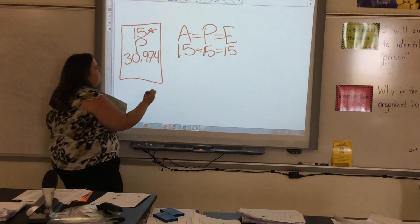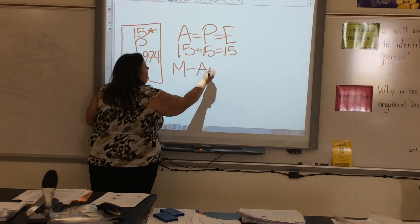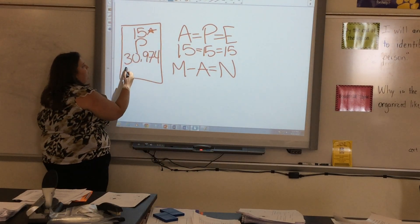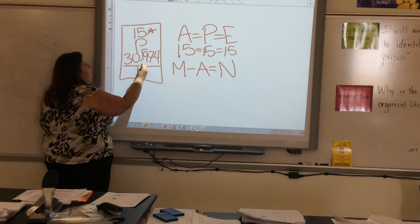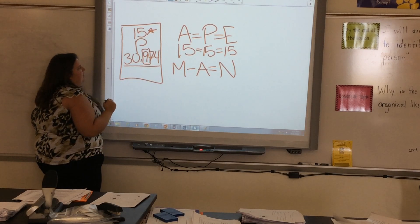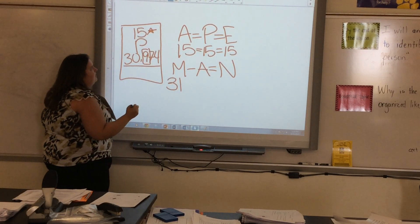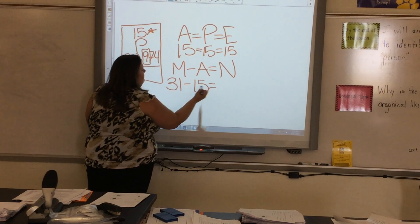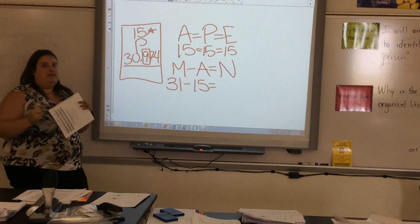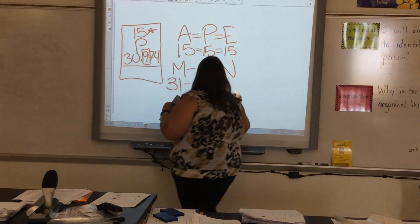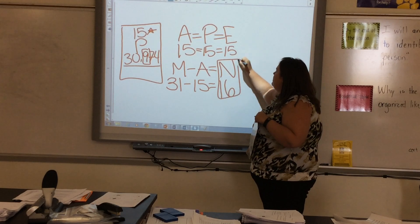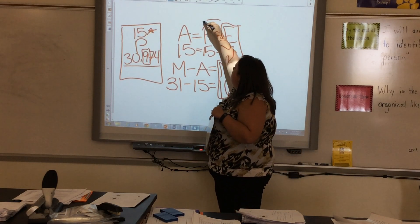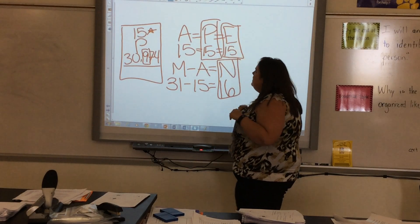And now I will do M minus A equals N. My mass, remember I'm going to round. This number right here tells me to round up. So mass is 31 minus 15 equals 16. Okay. So I have 16 neutrons, 15 electrons, and 15 protons.